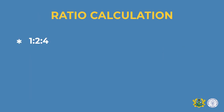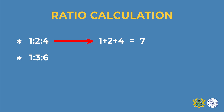Now that we know 1:2:4 and 1:3:6, to get a total ratio you must add 1 + 2 + 4, which gives you a total of 7 for reinforcement concrete. And for mass concrete, you add 1 + 3 + 6, which gives you a total of 10.